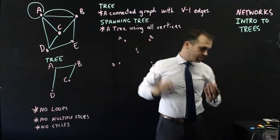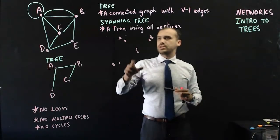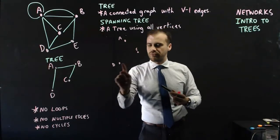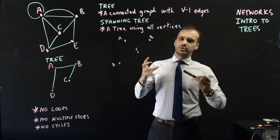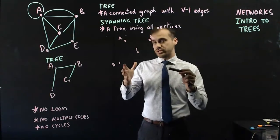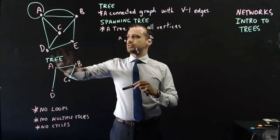And now I'm going to connect them all up. I've got one, two, three, four, five vertices. So I have to use four lines, or four edges. And I can only use the edges that already exist.